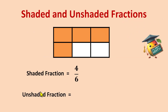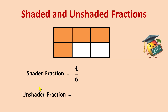Now we will write the unshaded fraction. For the unshaded fraction, the numerator is the unshaded parts — there are only 2. The total is 6 again, so the denominator remains the same. The shaded were 4 and the unshaded are 2, so 2 by 6 is our unshaded fraction.